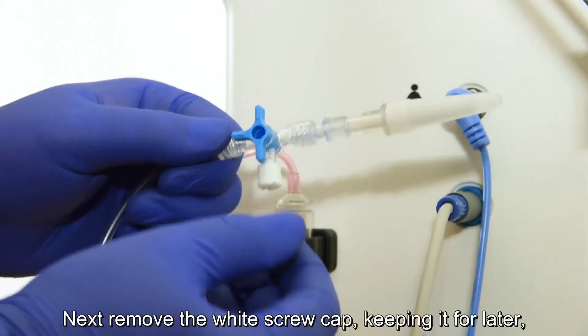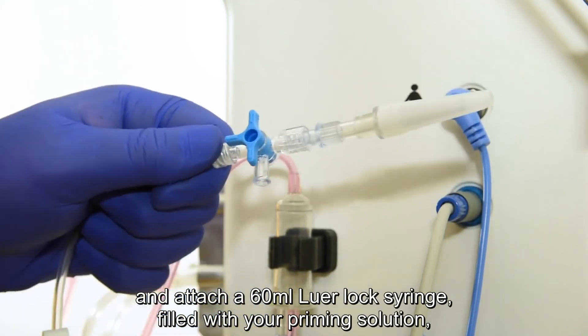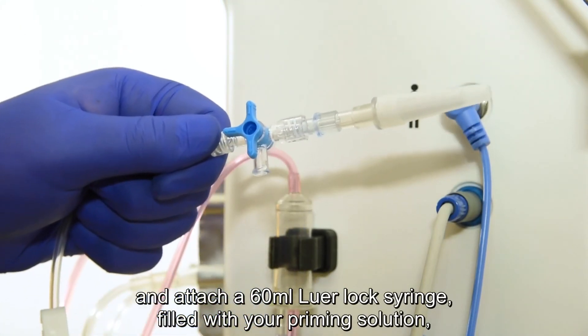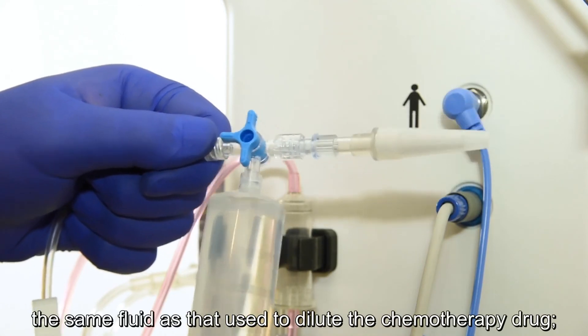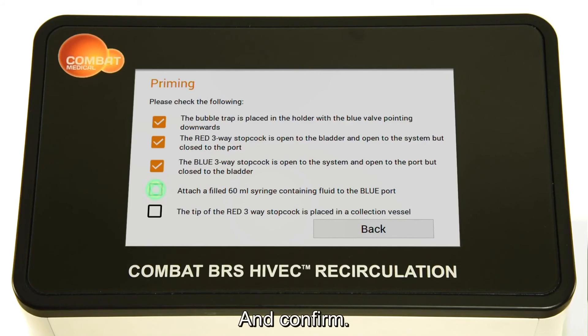Next, remove the white screw cap, keeping it for later, and attach a 60ml Luer Lock syringe filled with your priming solution. The same fluid that is used to dilute the chemotherapy drug. Saline or sterile water are most commonly used. And confirm.